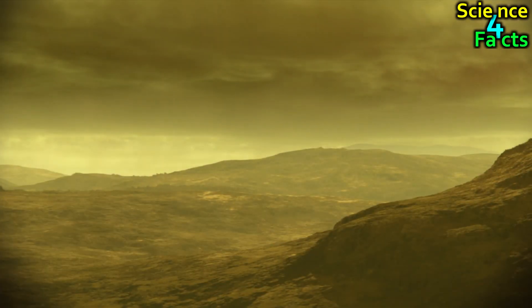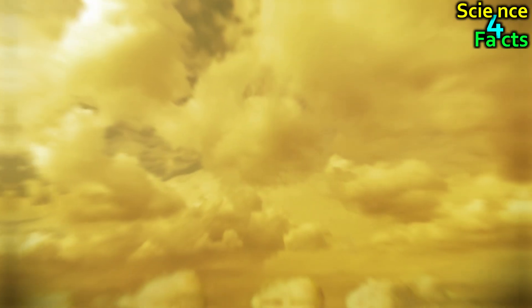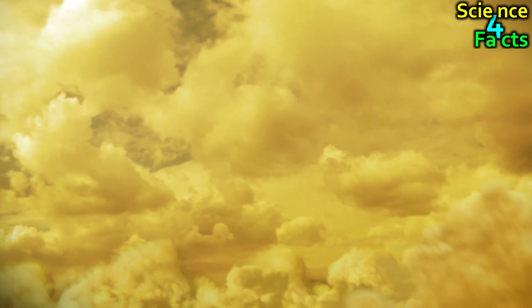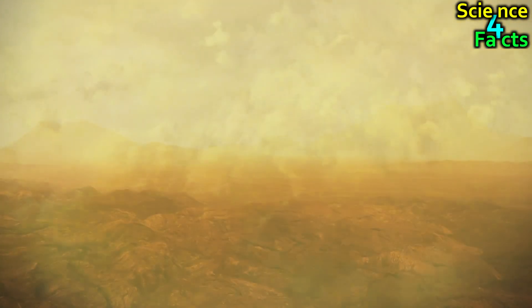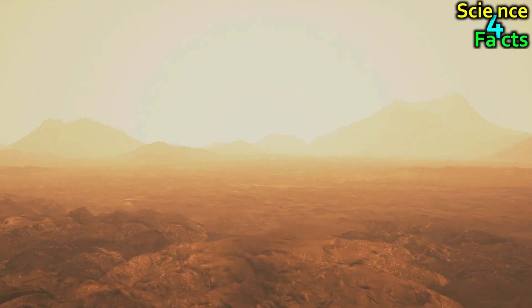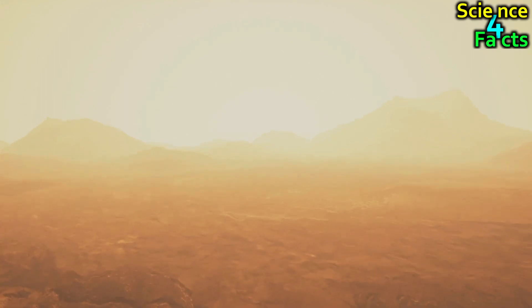Venus's thick atmosphere is mainly composed of sulfuric acid clouds, which create a strong greenhouse effect and contribute to the planet's scorching temperatures. The average surface temperature on Venus is around 460 degrees Celsius, which is hot enough to melt lead.